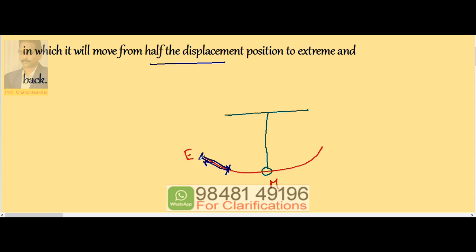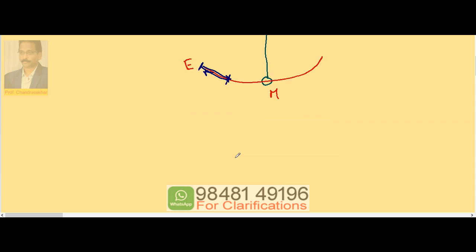Now let us imagine the particle starts from extreme. Pendulum starts from extreme. Then y becomes equal to... If the pendulum starts from mean, it is y = A sin ωt. If the pendulum starts from mean, this is the case of mean.